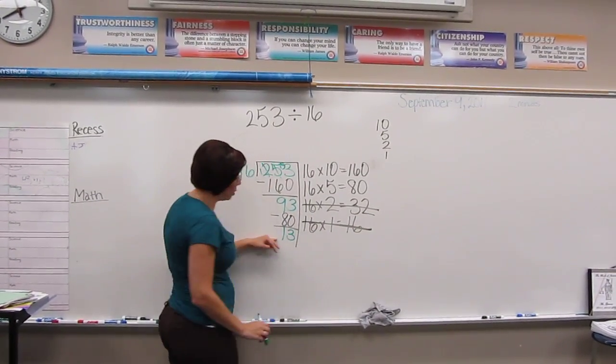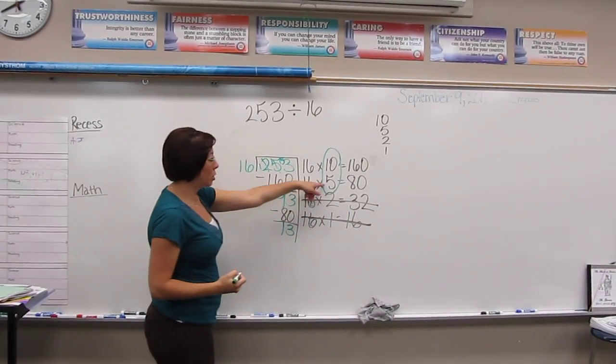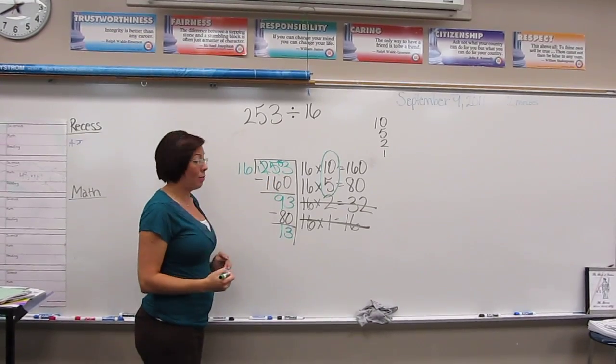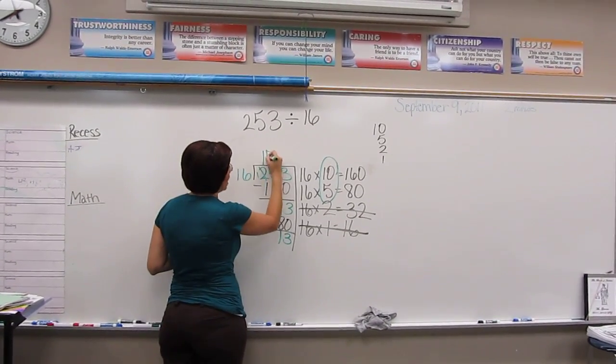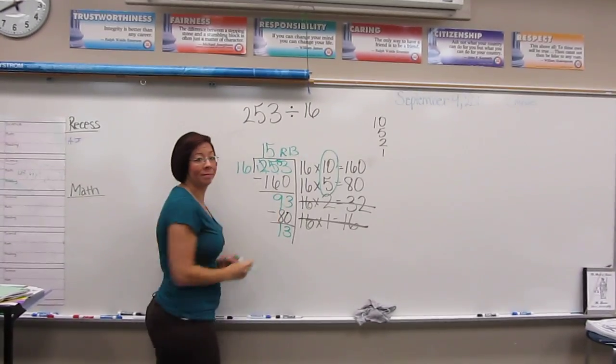Looking back at what I did use, I did use 15. So I know that 16 will go into 253 15 times with a remainder of 13. And that's how we divide.